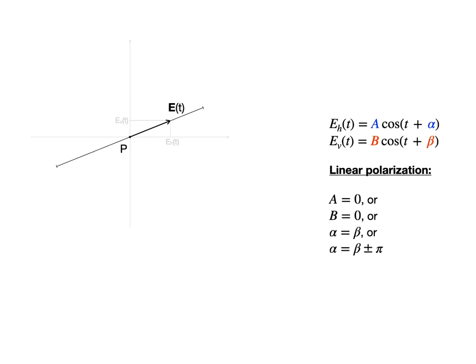Linear polarization means that the tip of the electric field vector E is going back and forth between the two endpoints of a given straight line segment.